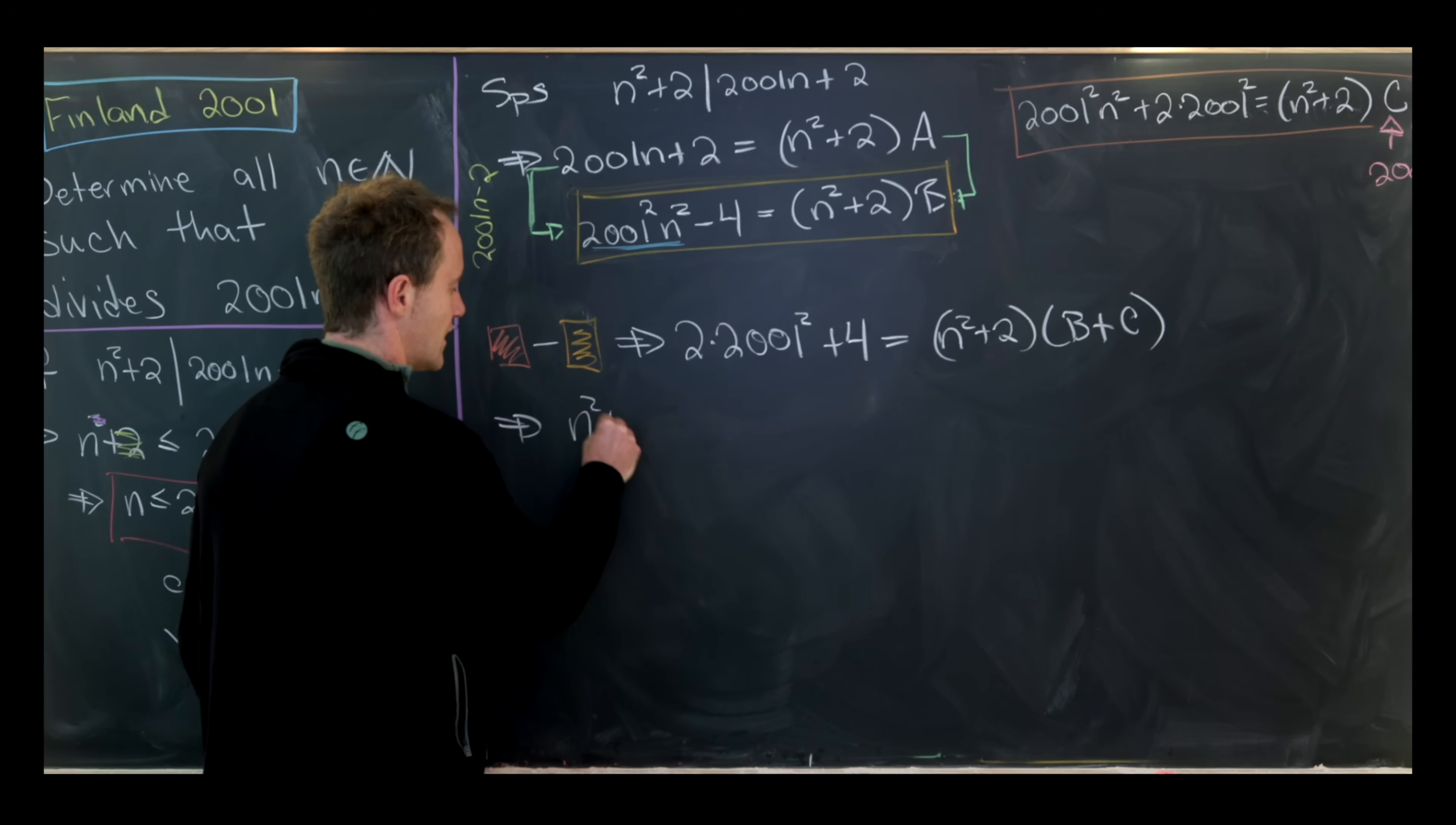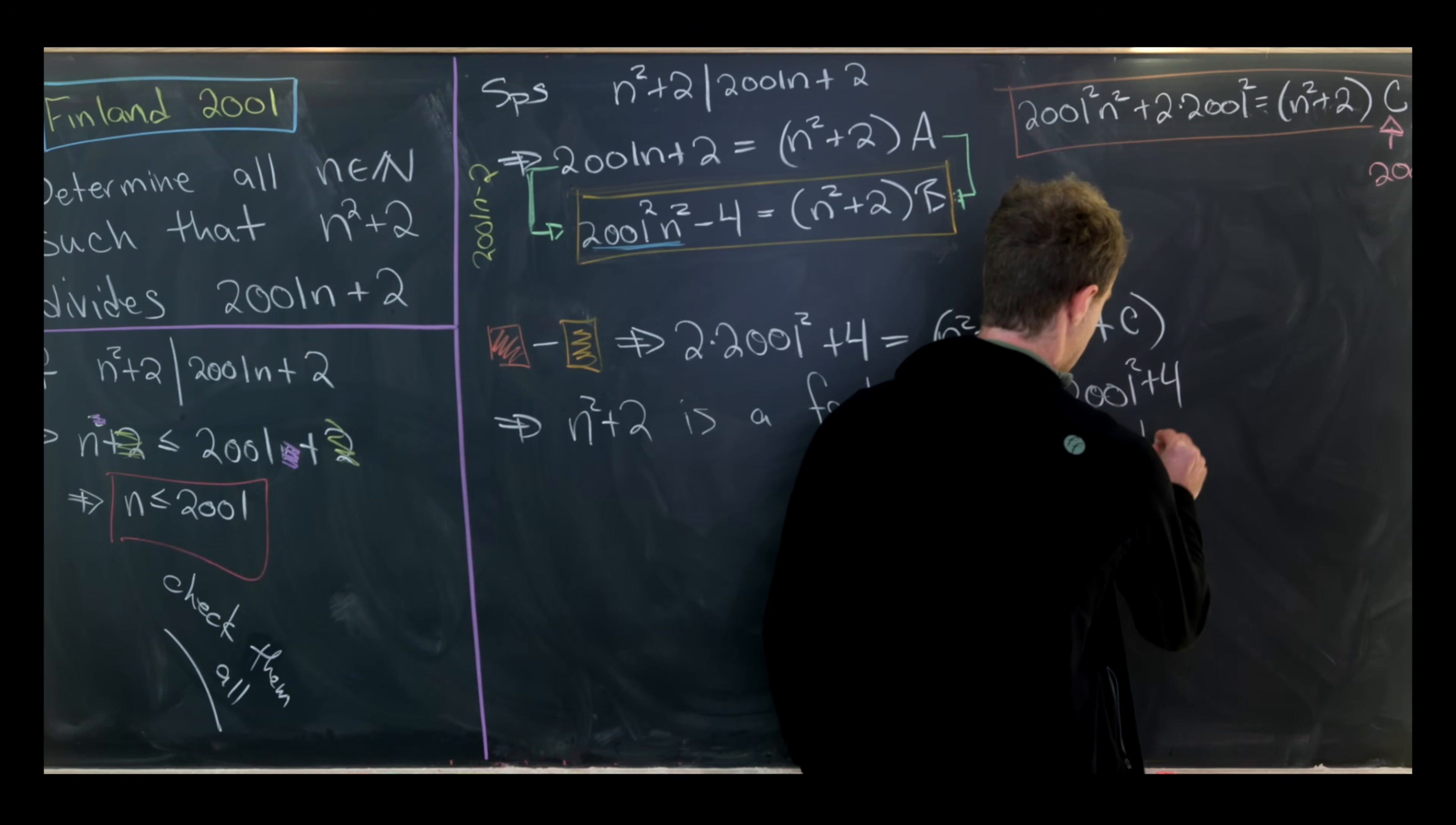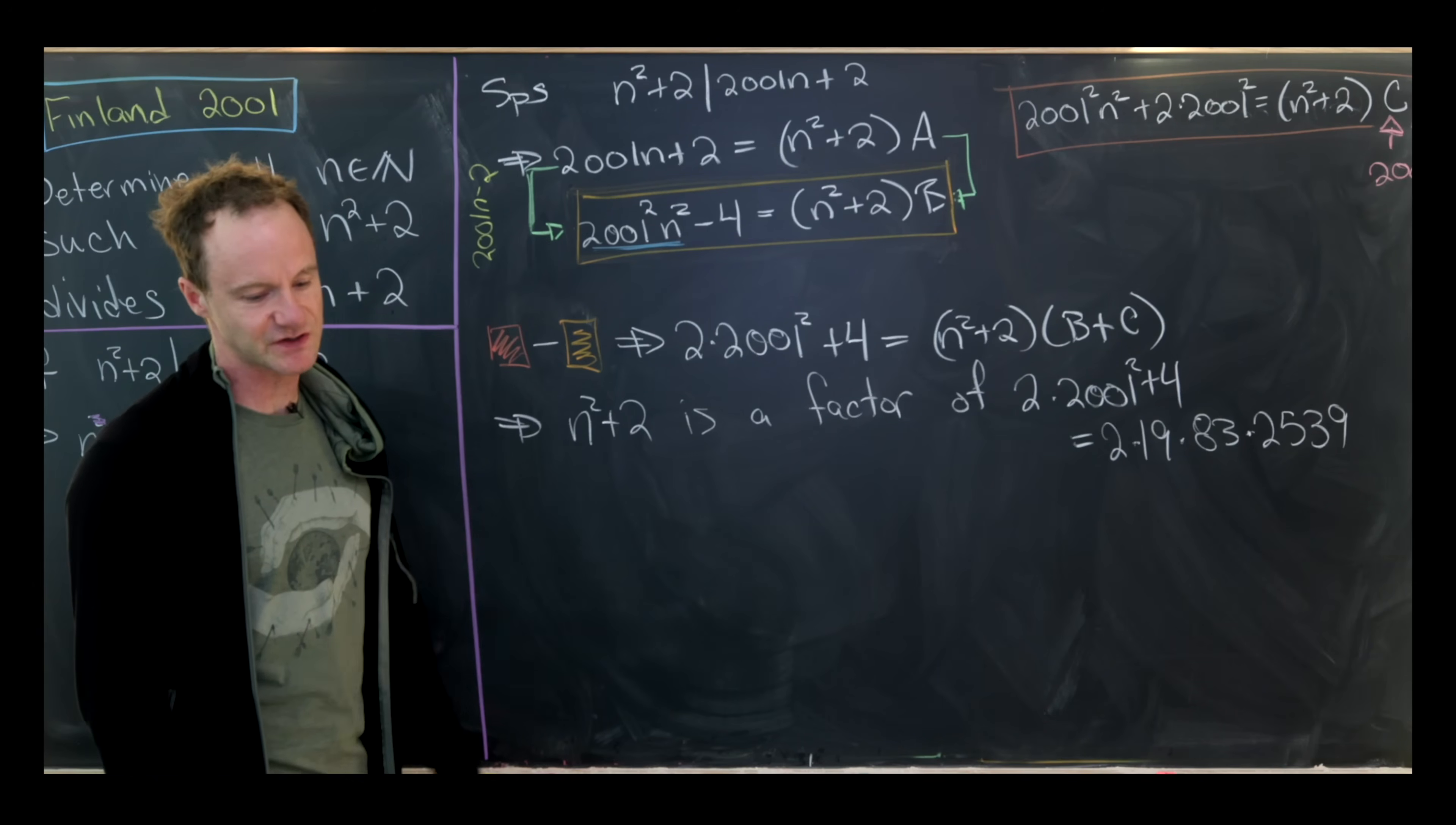That means that n² + 2 is a factor of this number right here: 2 times 2001² + 4, which we can factor into primes. And that factors into primes as 2 times 19 times 83 times 2539.